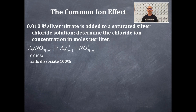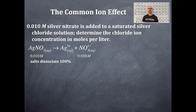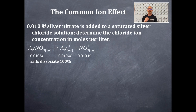This is a one-to-one mole ratio — one stoichiometric coefficient in front of silver nitrate, one in front of each product. So the nitrate ion concentration is 0.010 molar. Likewise, silver nitrate and silver ion are also in a one-to-one mole ratio, giving us a silver ion concentration of 0.010 molar. Now we move on to saturated silver chloride.